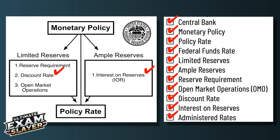The central bank can increase and decrease administered rates, which is different than the policy rate. The policy rate is the target rate, and the central bank doesn't have direct control over that. That's why the central bank does monetary policy — to increase or decrease the policy rate to affect the overall economy.